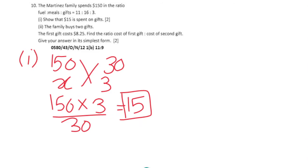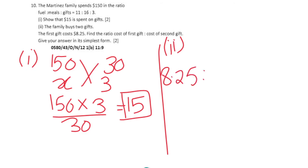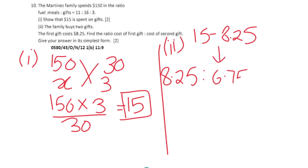Part 2: The family buys 2 gifts. The first gift costs $8.25, so the second gift costs 15 minus 8.25, which is $6.75. To express the ratio of gift costs in simplest form, enter 8.25 divided by 6.75 in the calculator and press the S→D button, giving us 11:9.